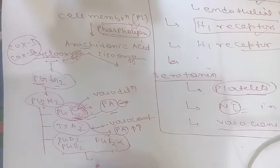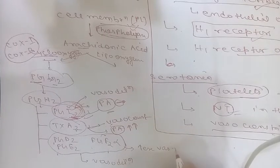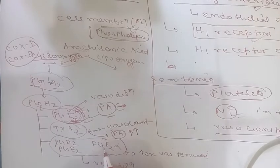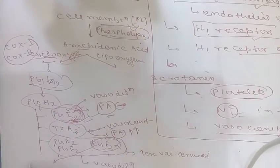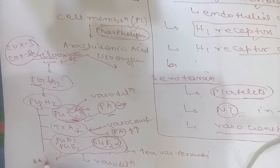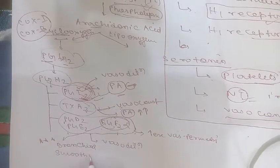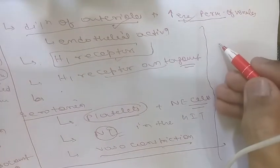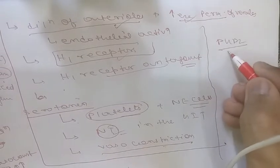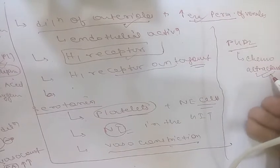PGD2, PGE2, and PGF2α cause vasodilation and can increase vascular permeability. An important specific function is that PGF2α causes contraction of uterine and bronchial smooth muscle and small arterioles. PGD2 also acts as a chemoattractant.